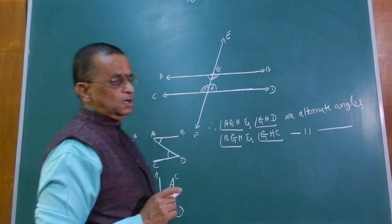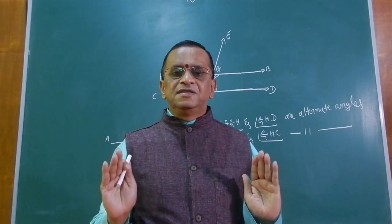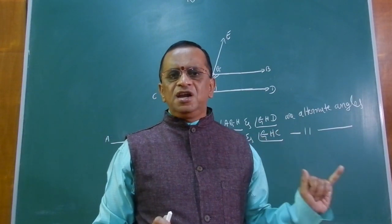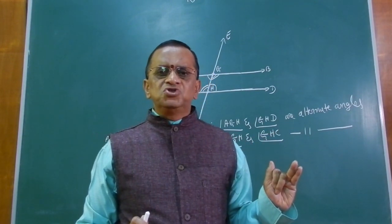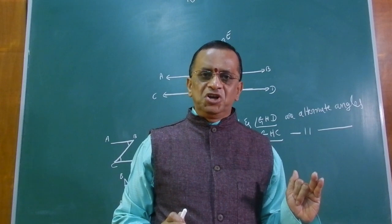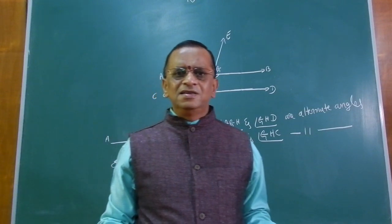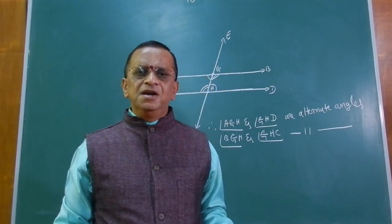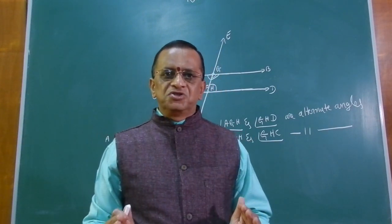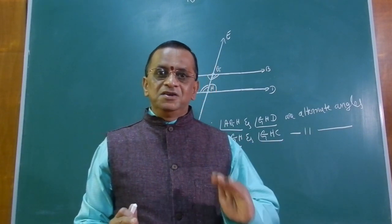Remember: if a ray stands on a straight line, then the sum of the adjacent angles formed is 180 degrees — this is the first theorem. Second theorem: if two straight lines intersect each other, then vertically opposite angles are equal. Now you are familiar with parallel lines, a transversal line, corresponding angles, and alternate angles. In the next video, we will prove theorem number 3 of the 9th standard.